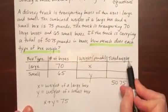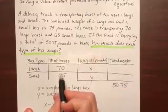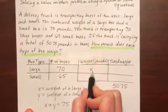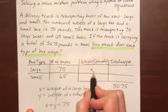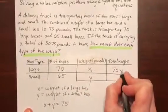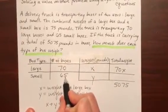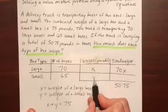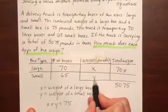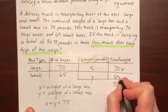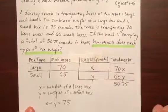So think about how we would get this. If I have 70 large boxes and each one weighs x, then 70 times x will be the weight of those large boxes. If I have 65 small boxes and y is how much each one weighs, then 65 times y will be the total weight of the small boxes.